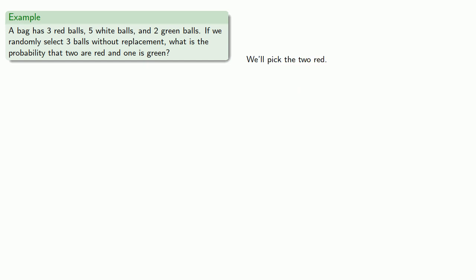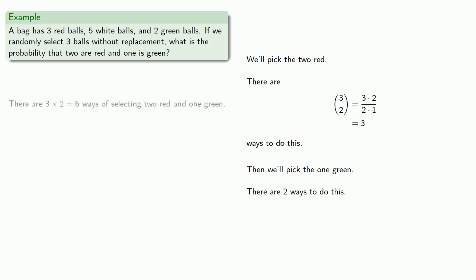So we'll pick the 2 red. There's 3 red balls to choose from, and we're going to select 2 of them. So there are 3 combined 2, or 3 ways to do this. We'll pick the 1 green. Since there's 2 green balls, there's only 2 ways to pick 1 green. And so there will be 3 times 2, 6 ways of selecting 2 red and 1 green.